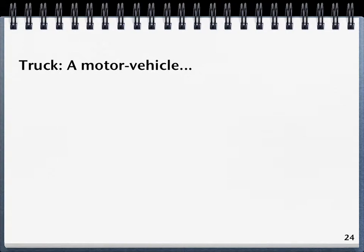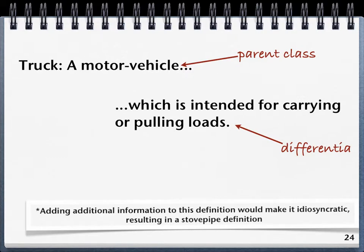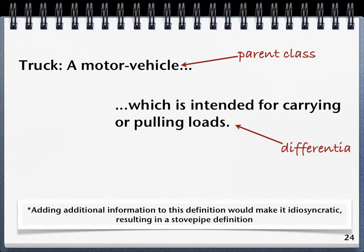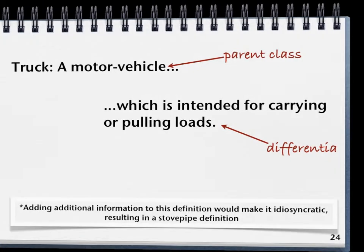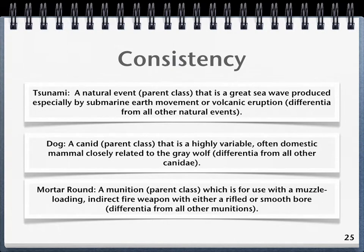Thinking back to our truck example, we start by referring to the parent class or genus: a truck is a type of motor vehicle which is intended for carrying or pulling loads — that is the differentia from all other motor vehicles. Note that adding additional information to this definition — for example, its role as a weapons platform or an IED transporter — would make it idiosyncratic, thereby resulting in a stovepiped definition. Remain consistent when creating definitions; these example definitions have the same genus-species format, making them accurate and concise as well as being linked to a common reality.